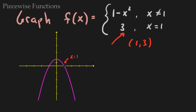So where does that point land us? 1, 2 — it would land us right here. So that's what you should do when you have piecewise functions defined like this.